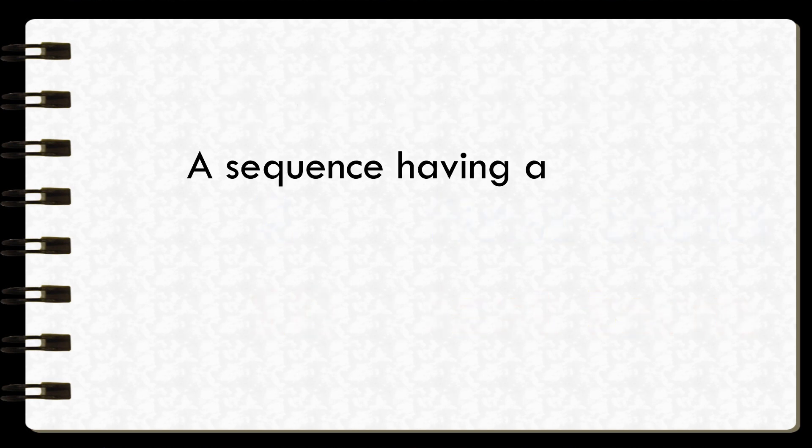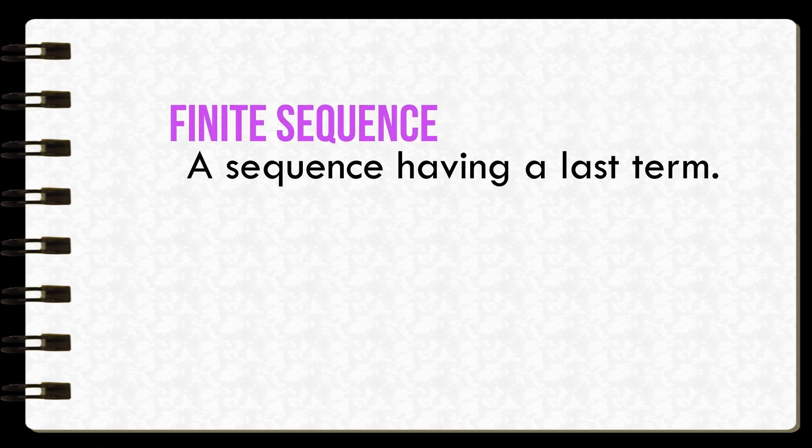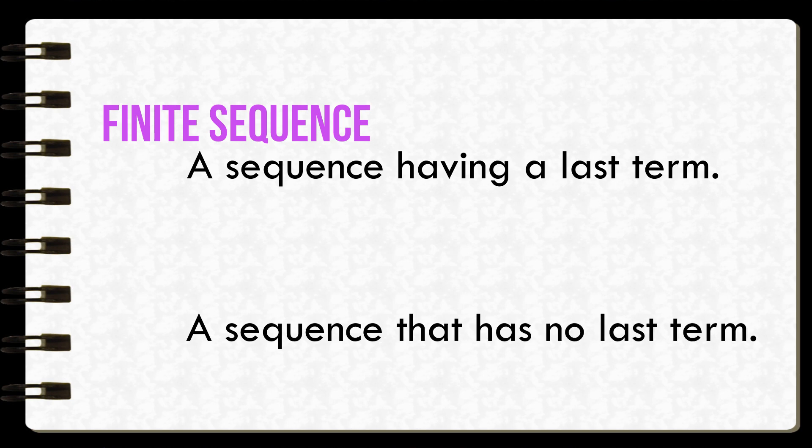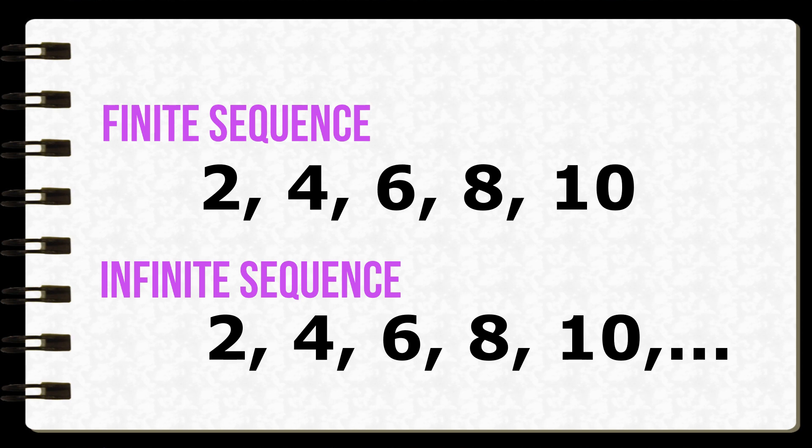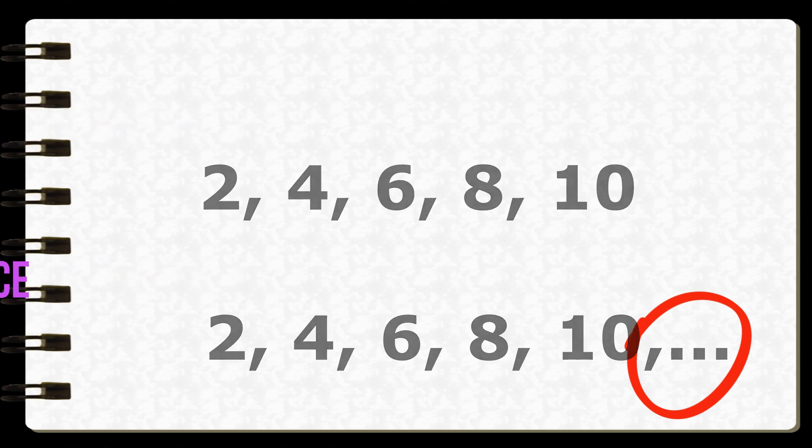Okay, now a sequence having a last term is called a finite sequence. A sequence that has no last term is called an infinite sequence. Let's have these examples. Can you guess what's the difference? That's right! We put this symbol to indicate that the sequence is infinite or endless.